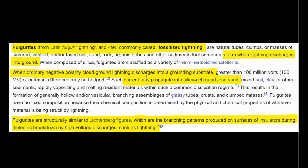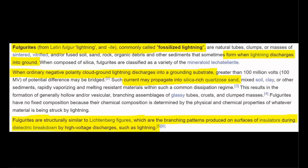Next, fulgurites are structurally similar to Lichtenberg figures, which are the branching patterns produced on surfaces of insulators during dielectric breakdown by high voltage discharges such as lightning. And remember this phrase, branching patterns, as it will be coming up later in a spectacular Sunday site visit to a site whose name literally means Lake of the Branches.